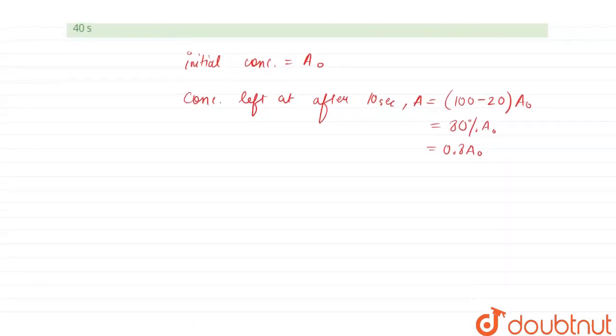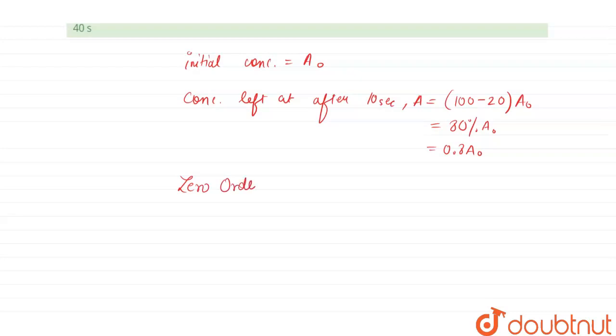In the question it has been given that it is a zero order reaction. So in a zero order reaction, the integrated rate will be K equals 1 by T times initial concentration minus concentration after time T. This is for 20%.